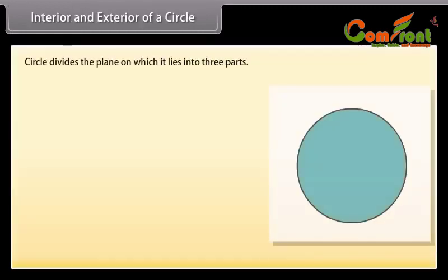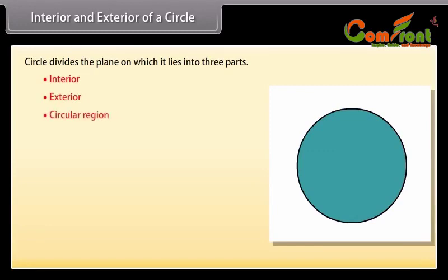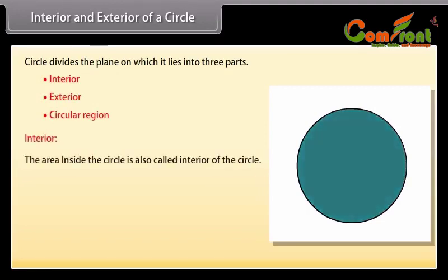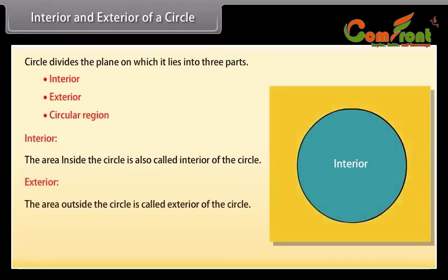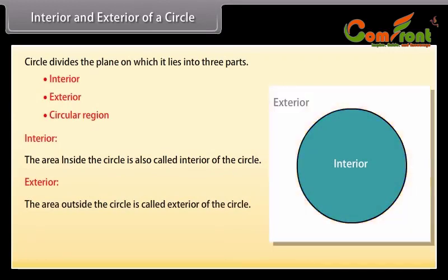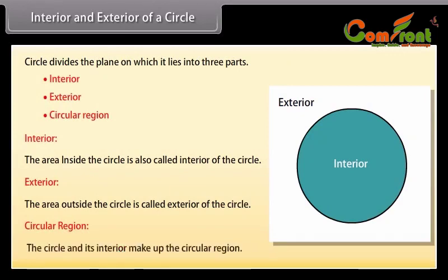Interior and exterior of a circle. A circle divides the plane on which it lies into three parts: interior, exterior, and circular region. The area inside the circle is called the interior of the circle. The area outside the circle is called the exterior of the circle. The circle and its interior make up the circular region.